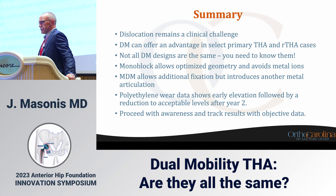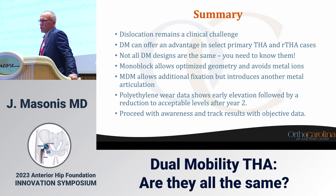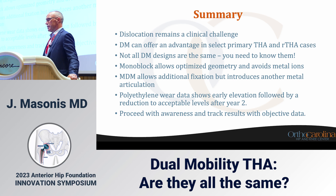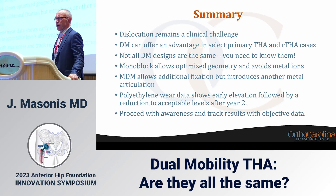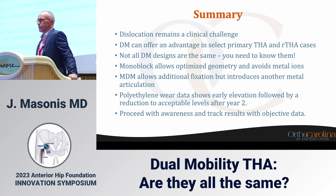In summary: dislocation is still a clinical challenge for some surgeons depending on approach, and DM can offer an advantage. Not all DM designs are the same — you need to know the design differences. Monoblock allows optimized geometry and avoids metal ion release, while modular dual mobility allows better fixation but introduces another metal articulation. Polyethylene wear data shows some early elevation with bedding-in but looks quite good at the five-year mark. We should proceed with awareness and track our results — we've been burned before.